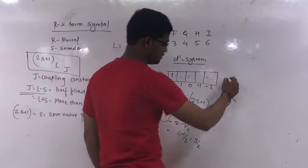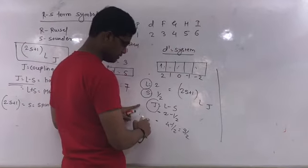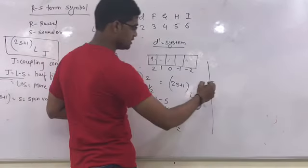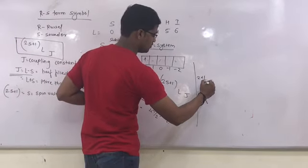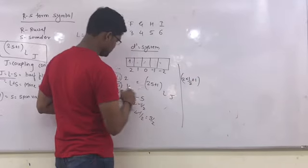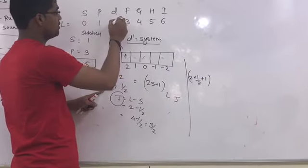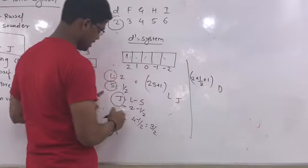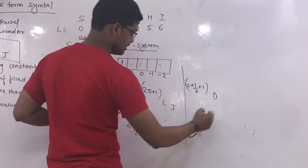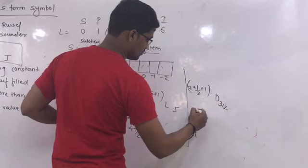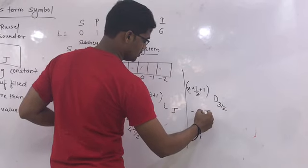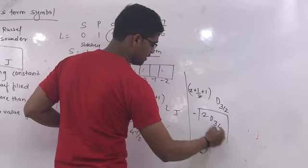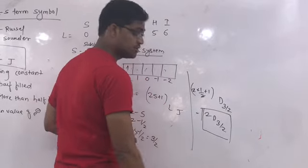Now, put the formula. 2S plus 1, S value is half. 2 into half plus 1. L is 2. For L equal to 2, it's D. So, D and J, L minus S that is 3 by 2. So, 2 gets cancelled. Therefore, 2D3/2. This is the final term symbol of R-S.